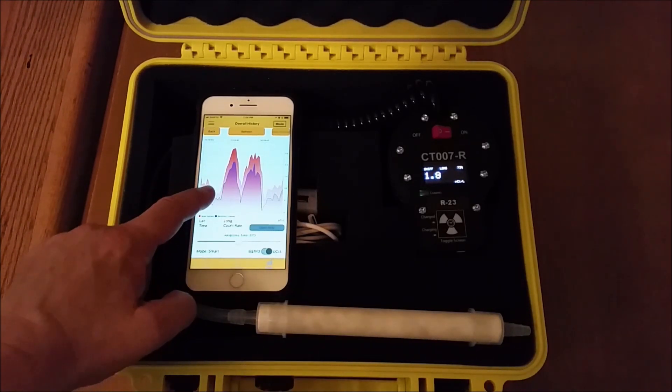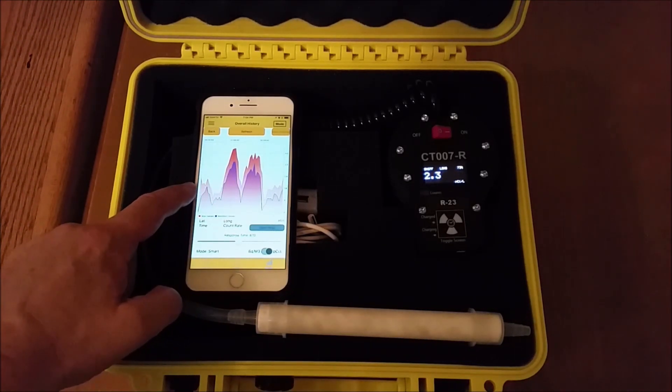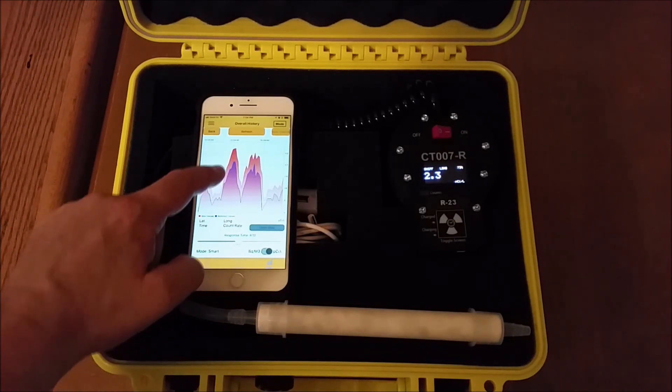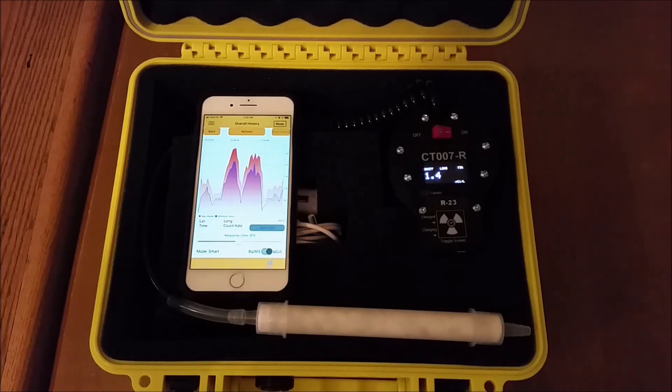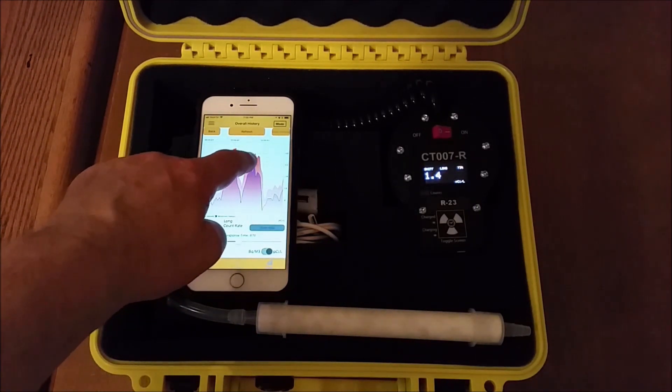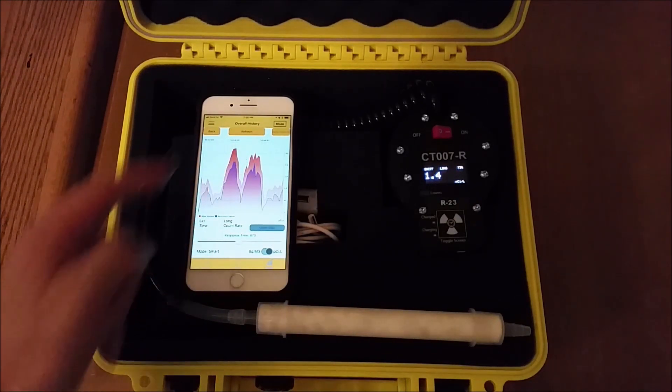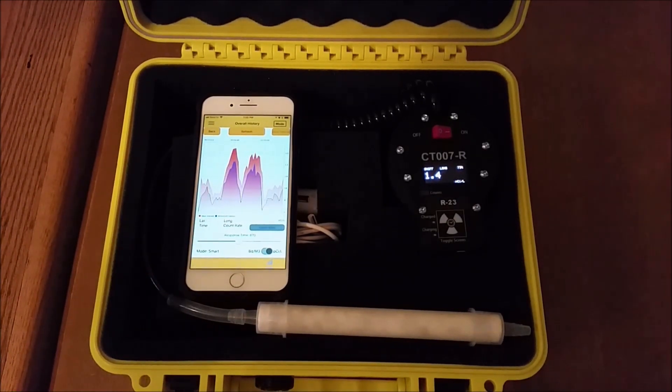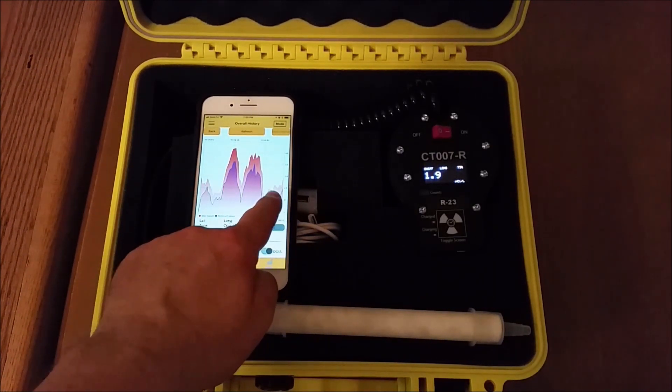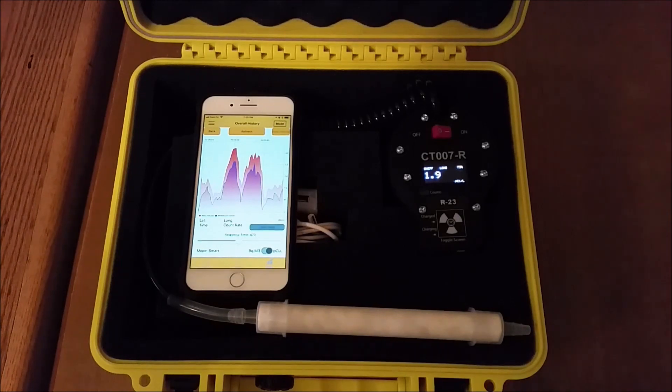To recap, at the beginning of the graph we were upstairs reading clean air. The graph then spikes to around 3 picocuries per liter. This is when we took the unit down into the basement. Our levels then surprisingly dropped for a while once we opened our radon covers and turned our HRV off. However, they almost returned to the same level as before shortly after. We then moved the unit back upstairs and returned to an average of about 1.2 picocuries per liter.